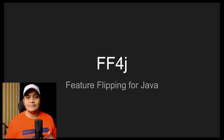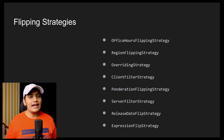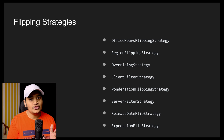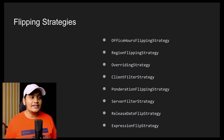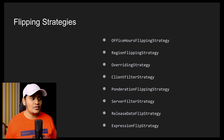Let's understand the different strategies available using FF4J and how we can implement them in our Spring Boot application. There are different types of strategies available and we can use any of those strategies in our application. All those strategies require a different implementation and each strategy has its purpose — when to use what. It's really easy to implement and documentation is also available, which I'll link in the description below.